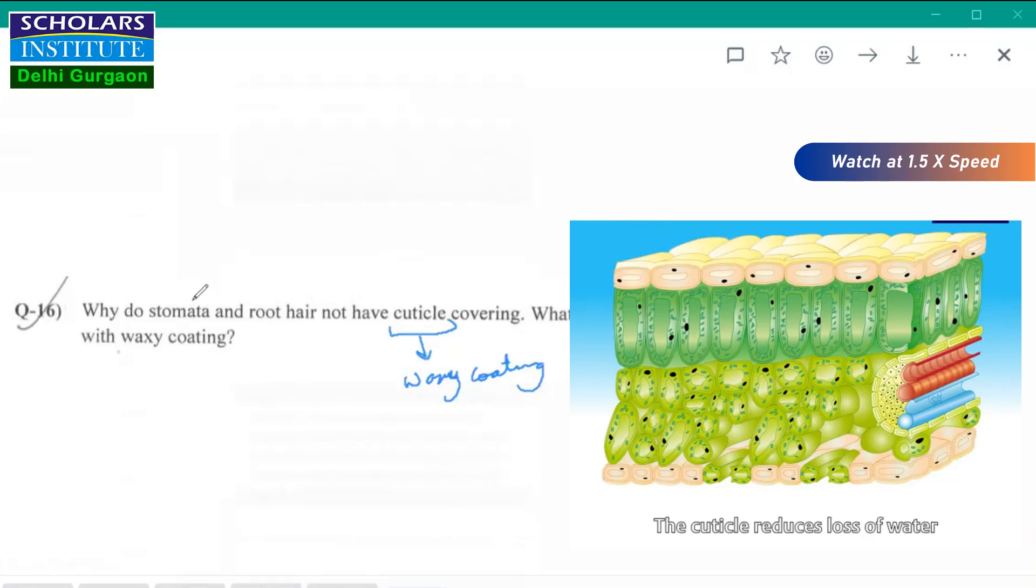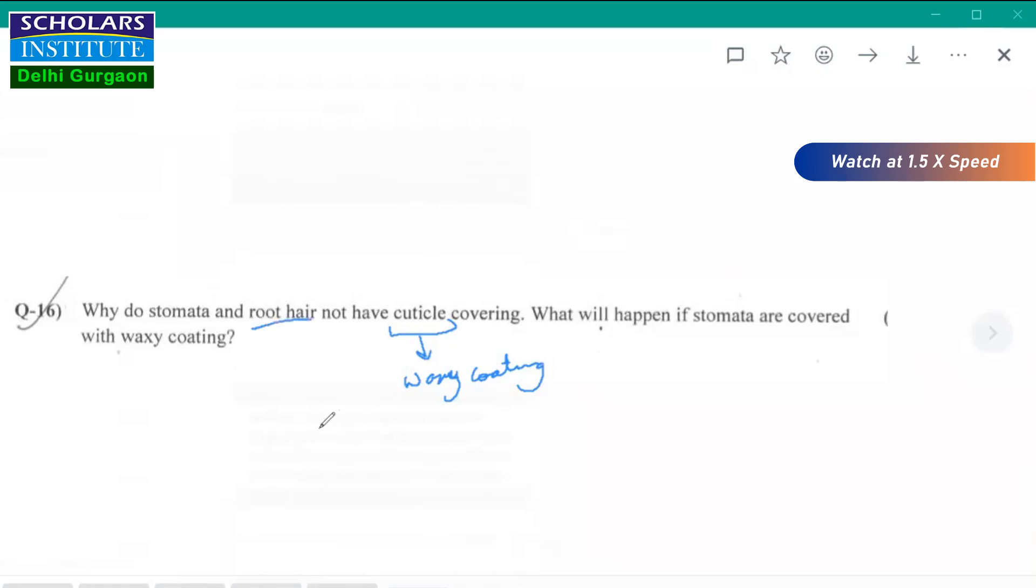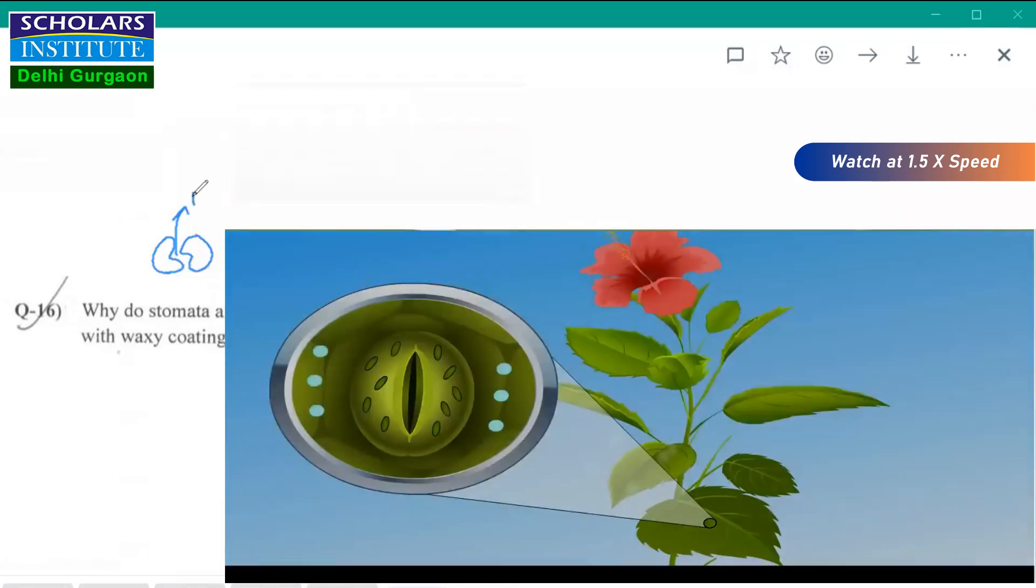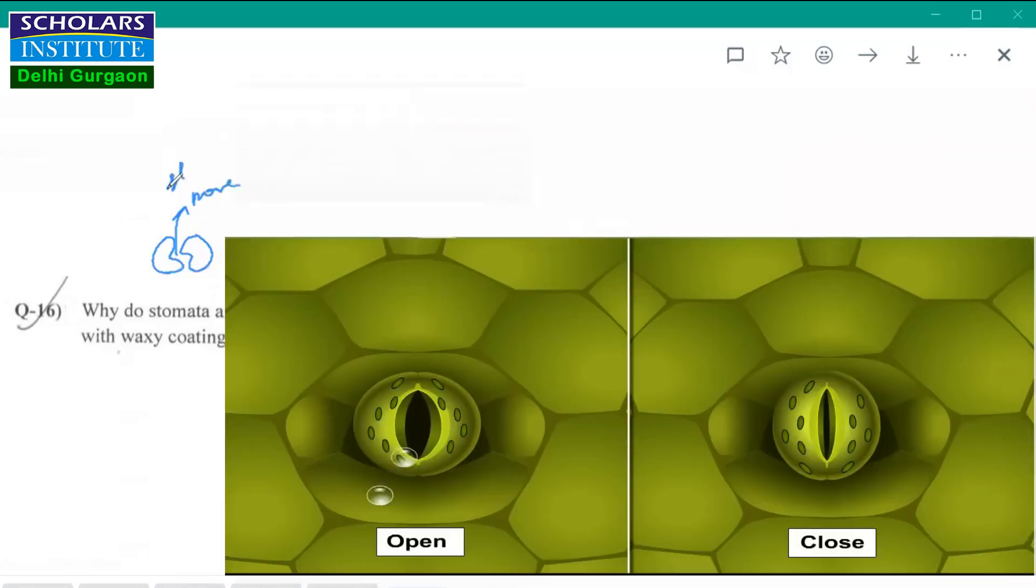But stomata does not have it and root hair also does not have it. Why? Because stomata which is formed with the help of these guard cells have a pore called stomatal pore, which is responsible for exchange of gases and transpiration.